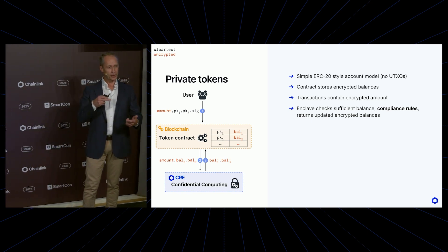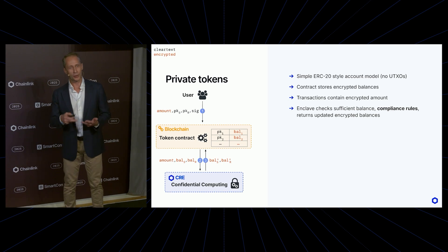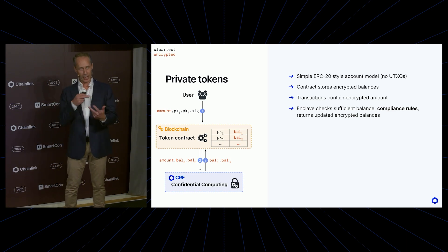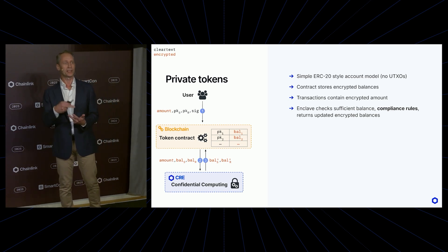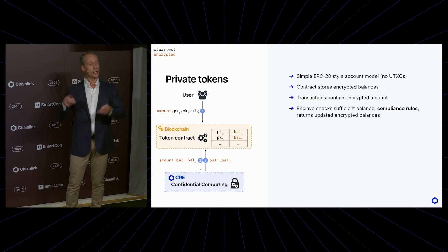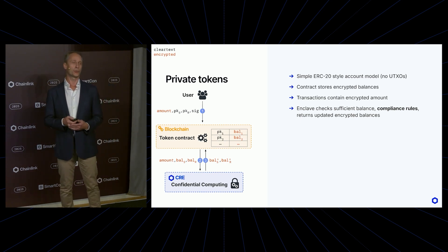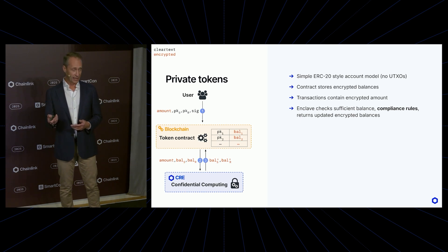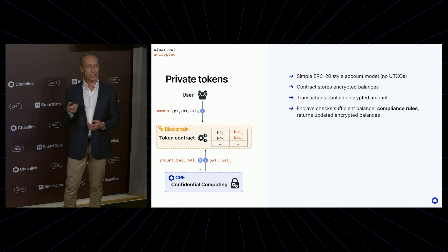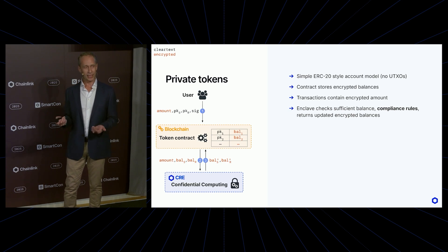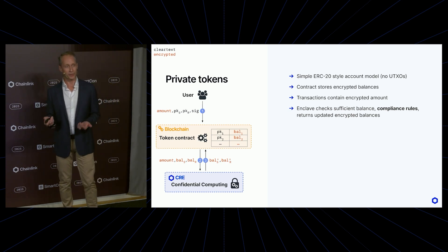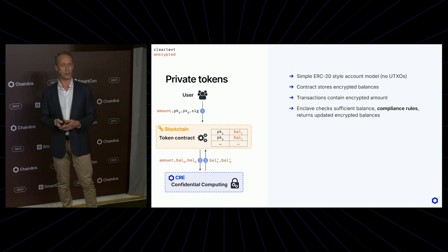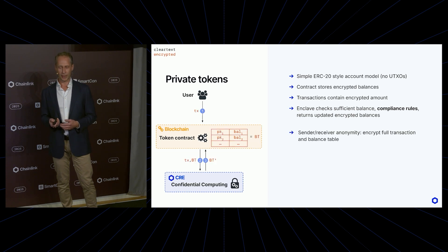What the smart token contract will then do is reach out to Chainlink Confidential Compute with the encrypted amount and the encrypted sender and receiver balances, so that inside the enclave the amount can be subtracted from the sender balance and added to the recipient balance, the balances re-encrypted, and submitted back on chain. On top of that, the enclave could also perform any compliance checks you want — giving you compliant private tokens.